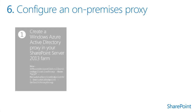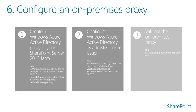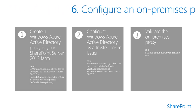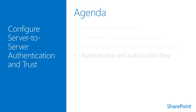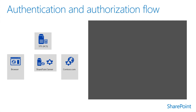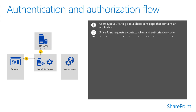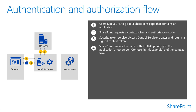SharePoint 2013 will use the Azure Active Directory proxy to sign user authentication tokens and to authenticate tokens from SharePoint Online. This section provides an overview of the authentication and authorization flow. In Step 1, if the user is not logged in, the logon prompt appears. If the user is logged in, that will initiate a single sign-on.